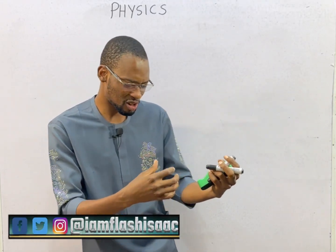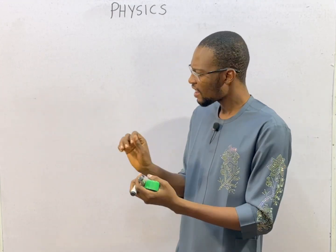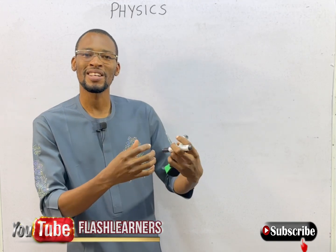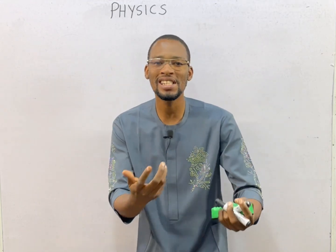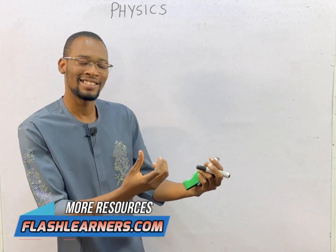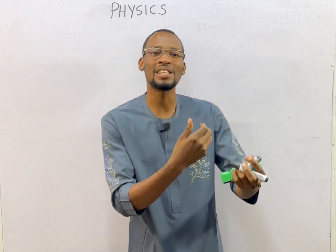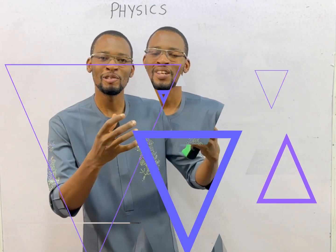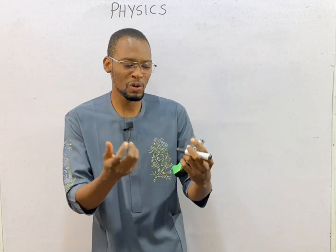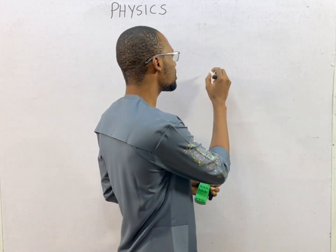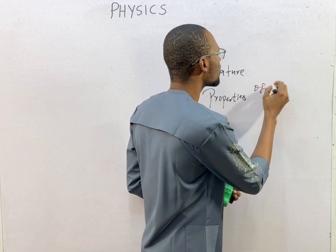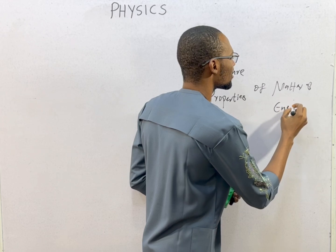In other words, physics studies the things around us. Out of the various subjects like biology that studies life in living things, or chemistry that studies the composition, properties and uses of matter, or commerce that studies buying and selling plus other activities that aid buying and selling — no one touches natural phenomena like physics. So by definition, we say that physics is a branch of science that studies the nature and properties of matter and energy.